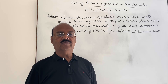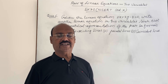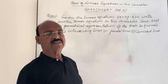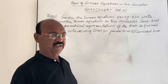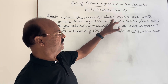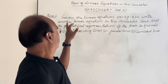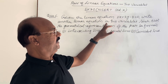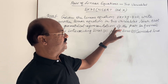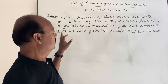Let us see an important question from the chapter pair of linear equations in two variables. This is question number 6 from exercise 3.1 of the NCERT book. The question is: given the linear equation 2x + 3y - 8 = 0, write another linear equation in two variables such that the geometrical representation of the pair so formed covers three cases.